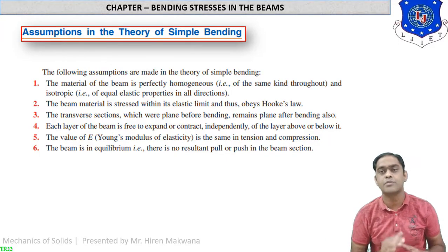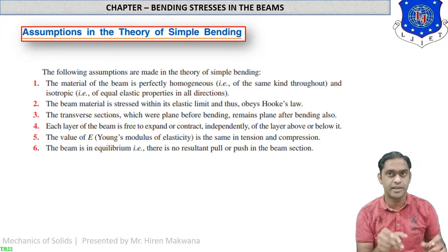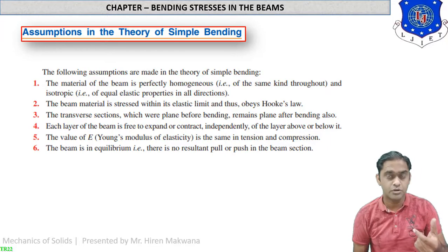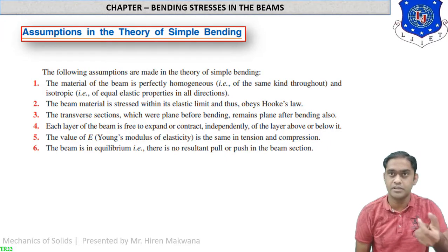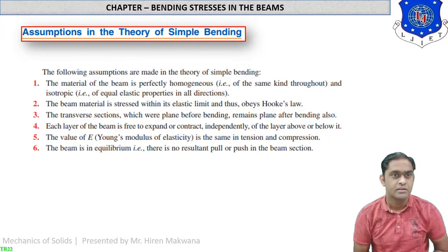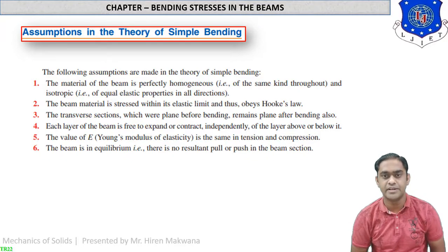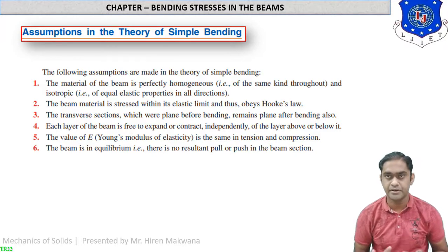The elastic properties are the same in all directions. We can assume that if elongation of the beam occurs by a certain amount on the front side, the same elongation occurs on the back side. Number 2: the beam material is stressed within its elastic limit and thus obeys Hooke's law — meaning the beam material has a limit up to which it can be stressed.